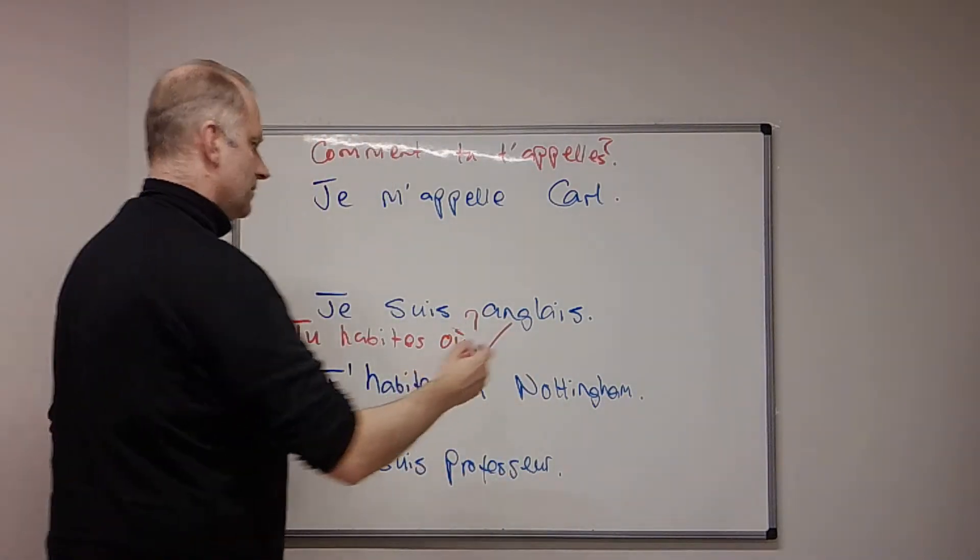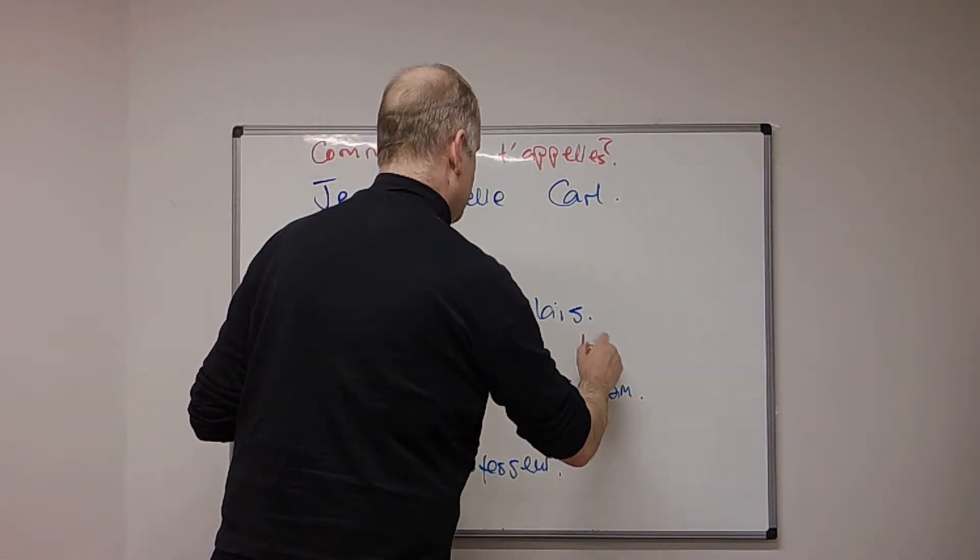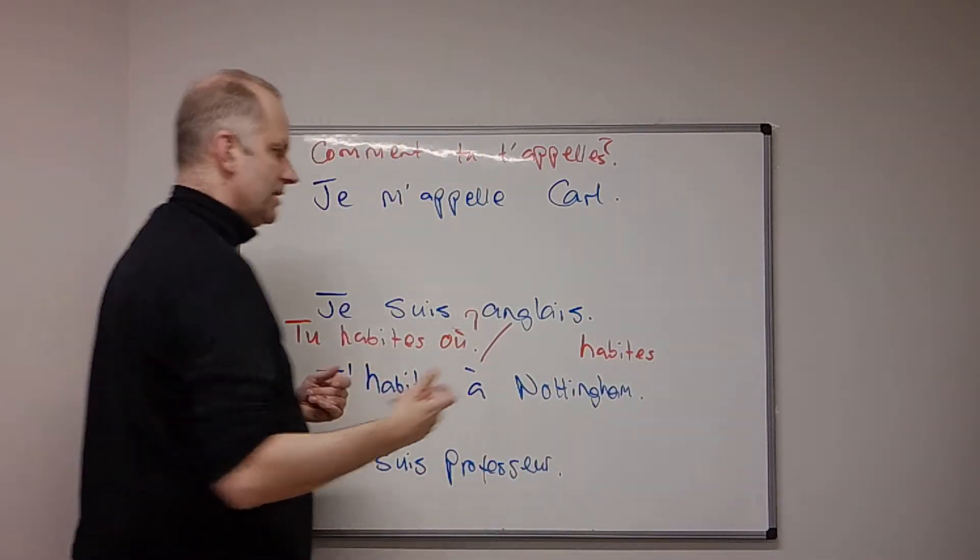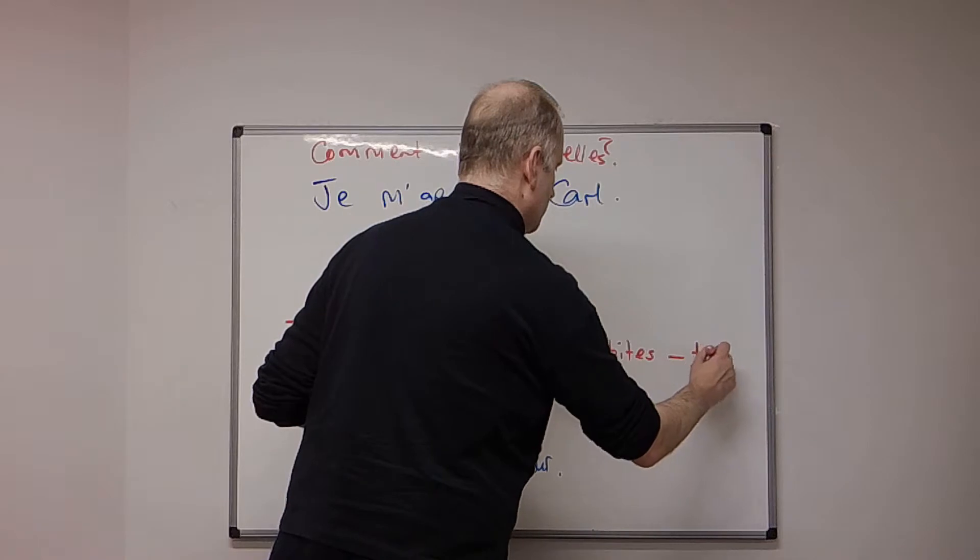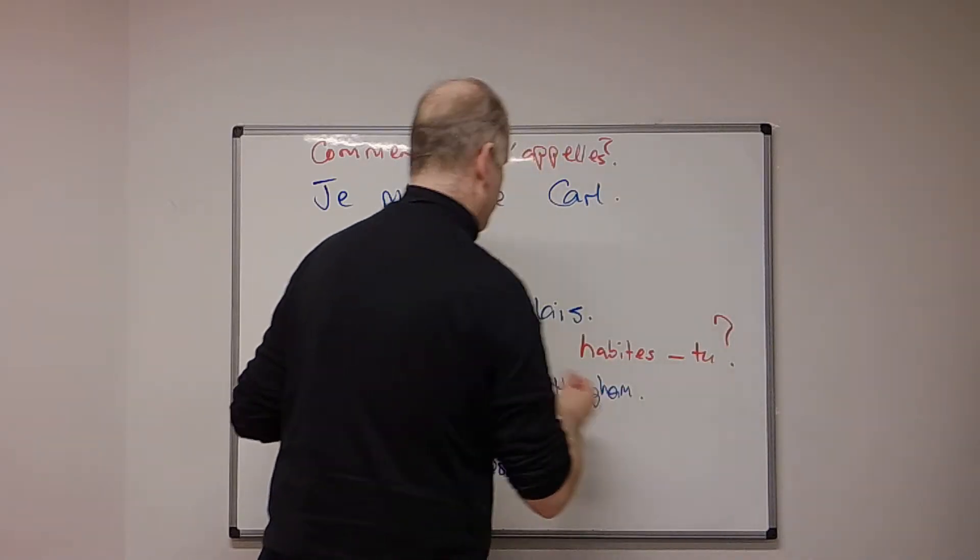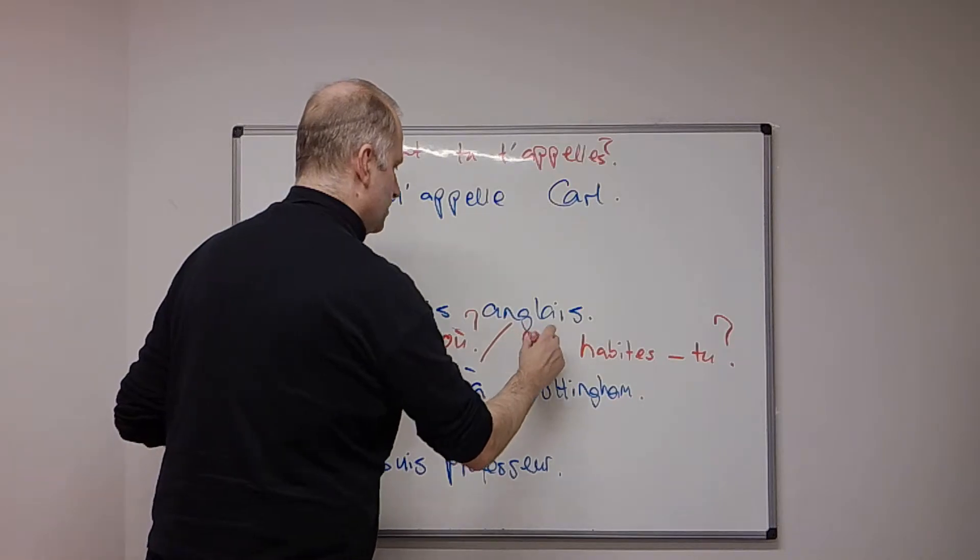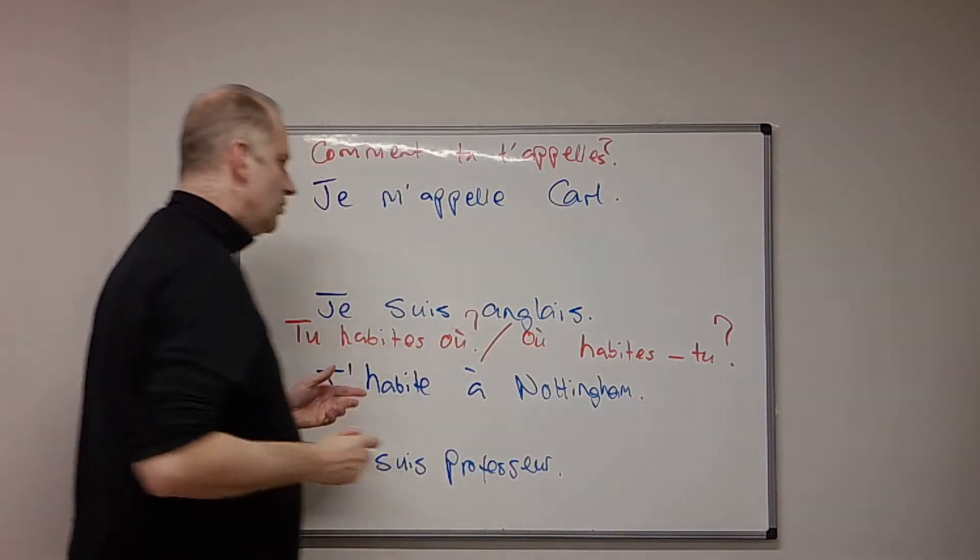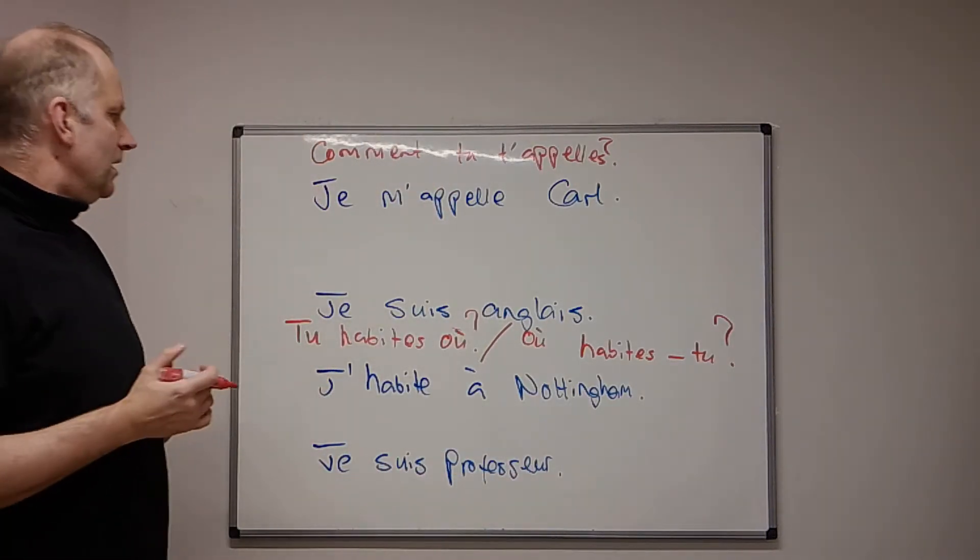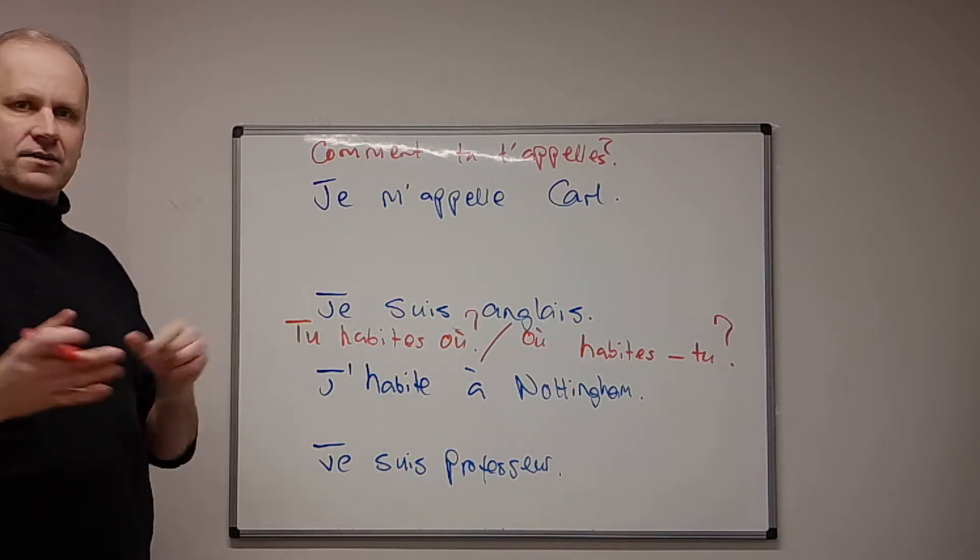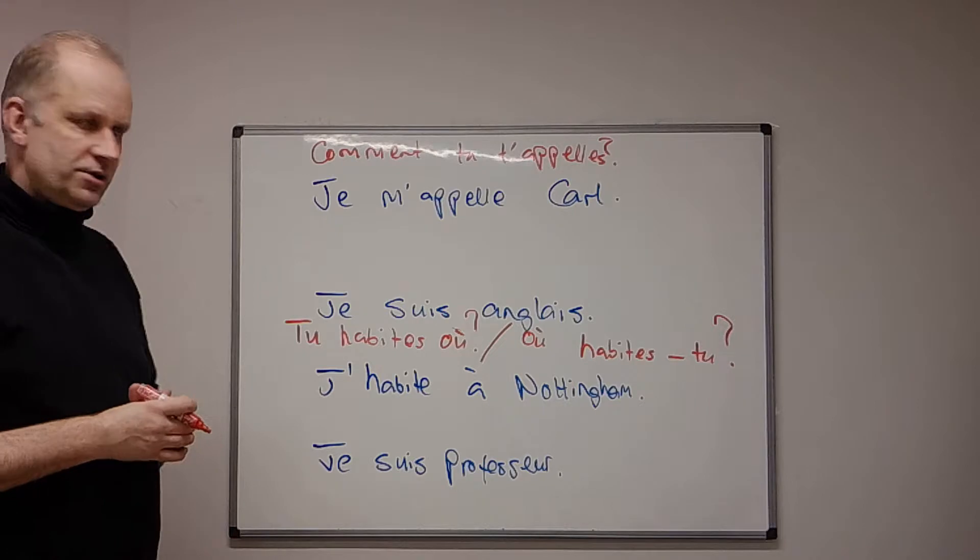We can put the verb first and then the subject habite tu. And then we put the question word at the front. Où habites-tu? There is another way of asking a question, but we'll look at that in another tutorial on forming questions in French.